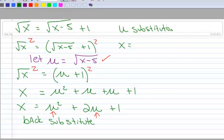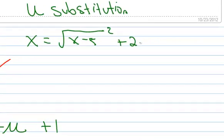it's going to look like this, X equals, well now we've got that radical, X minus 5, and it's squared. And then we've got plus 2, and then U,